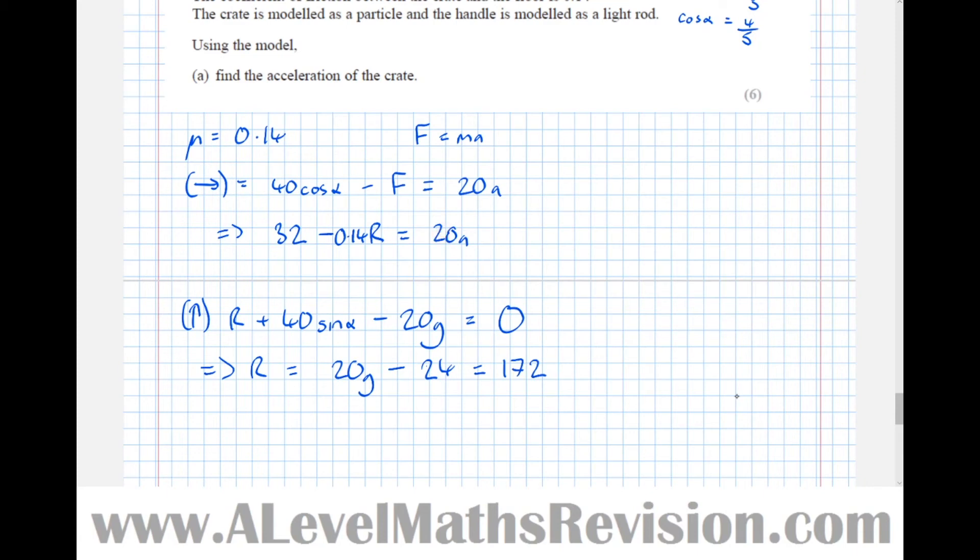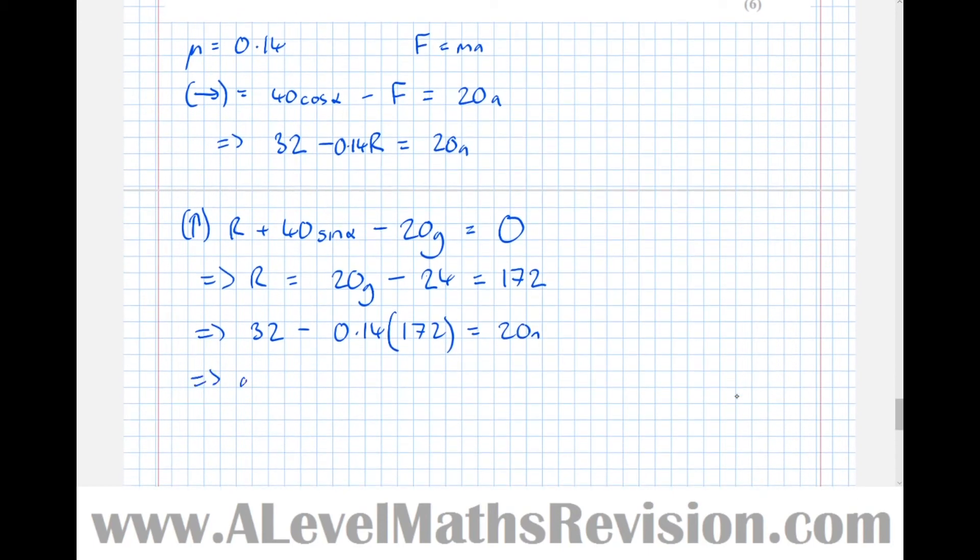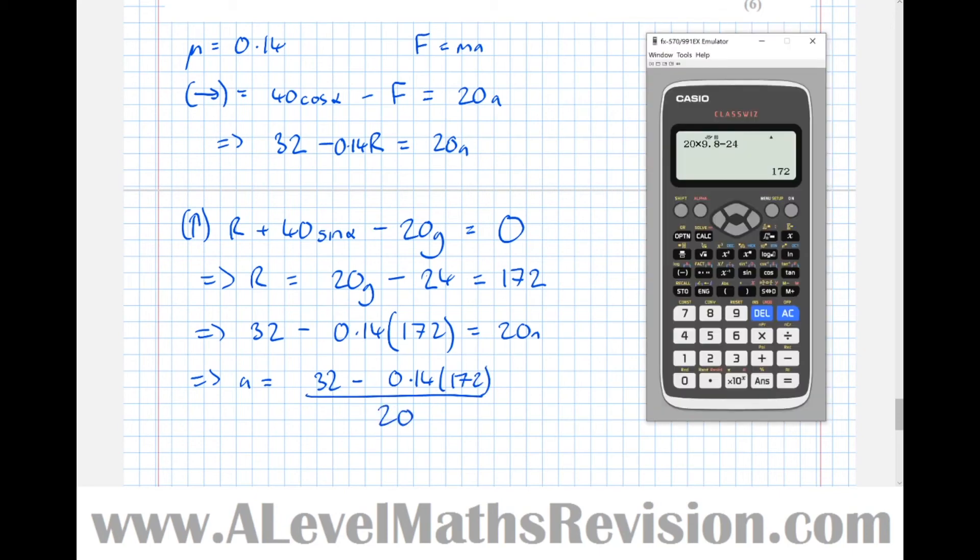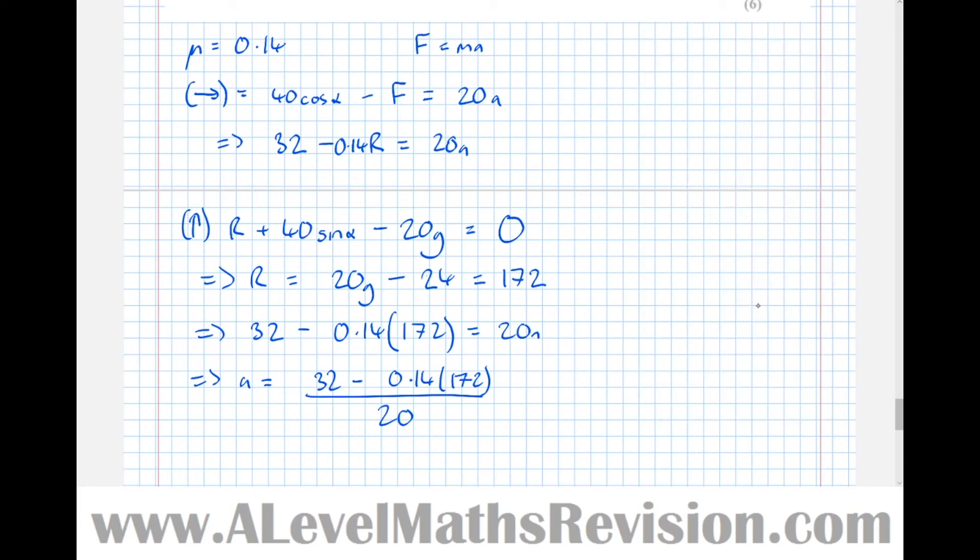If we now put it into this formula here. So that implies that 32 take away 0.14 lots of 172 equals 20 A. And that means that A equals 32 minus 0.14 lots of 172 all over 20. So 32 take away 0.14 lots of 172 over 20 equals 99 over 250 or 0.396 meters per second squared.